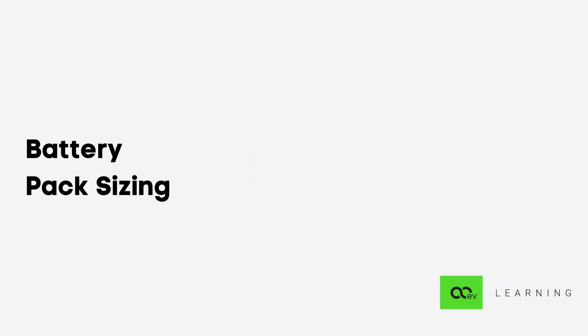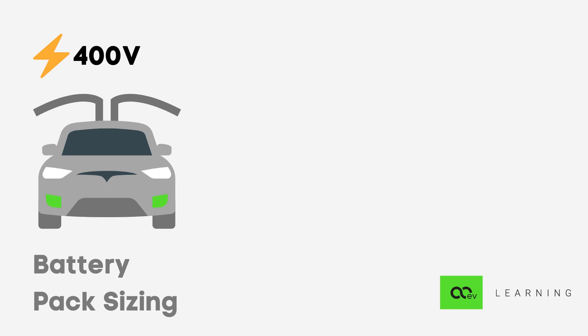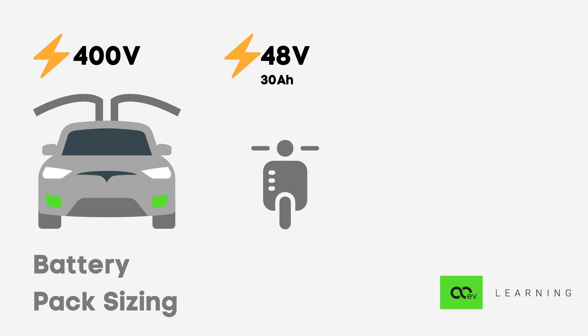In this session we will have a look at battery pack sizing. A Tesla car has a 400 volt battery pack and a normal scooter has a 48 volt battery pack. The normal scooter comes with a 48 volt 30 Ah battery pack. 48 volt denotes the voltage of the battery and overall system, and 30 Ah denotes the overall capacity of the battery pack.